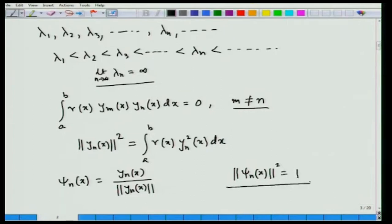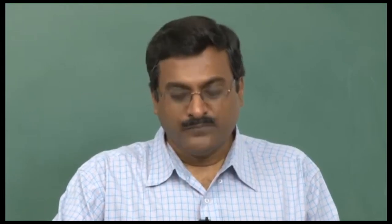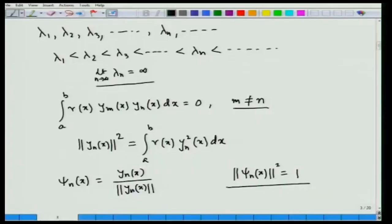The norm of eigenfunction y_n(x) is defined as: ‖y_n‖² = ∫_a^b r(x)y_n²(x) dx. If we define ψ_n(x) = y_n(x)/‖y_n(x)‖, dividing each eigenfunction by its norm, we obtain a family of orthonormal functions. With this definition, ‖ψ_n‖² = 1. This is easy to verify. The following example will illustrate the role of r(x) in defining orthogonality, the norm of a function, and the concept of orthonormal eigenfunctions.